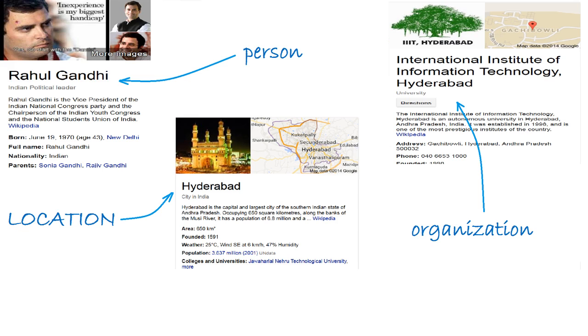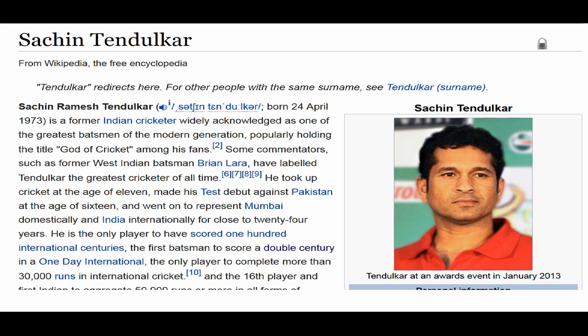To ensure a query contextual result disambiguation, the TF-IDF vector space model has been implemented. For instance, when we search for Sachin, if the context driven by the above algorithm is cricket, then the output articles are those linking to Sachin Tendulkar, the cricketer.